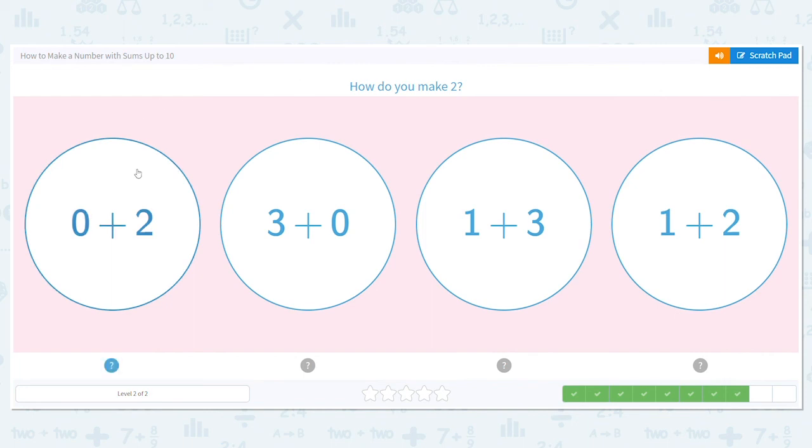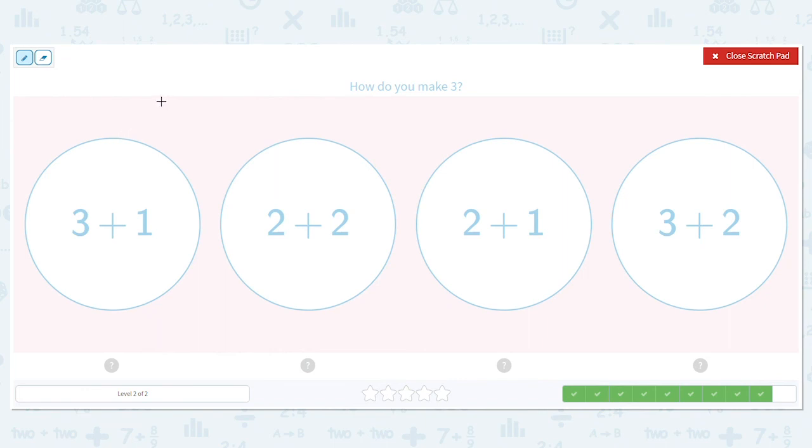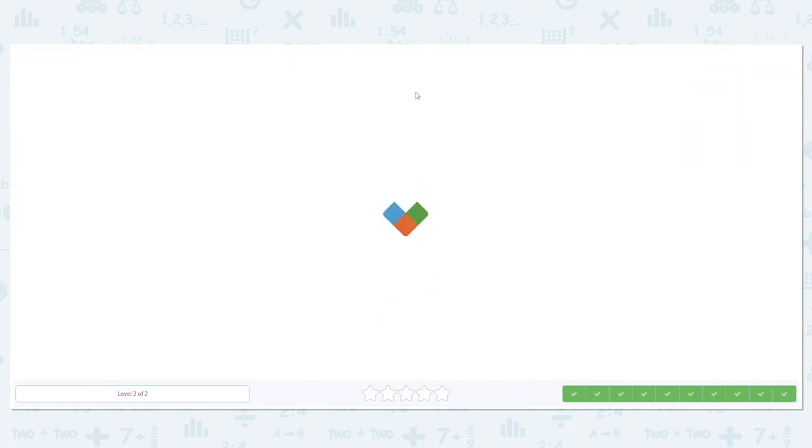It's 0+2. We're using that zero rule: any number plus 0 equals the other number. How about here, how will I make 3? No zero trick this time. Well, what's 3+1? That's 4. What's 2+2? 4. What's 2+1? 3. And what's 3+2? 5. So that means our answer is 2+1, which equals 3. You did a fantastic job!